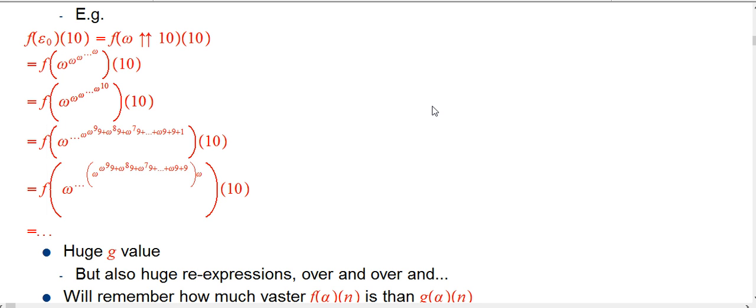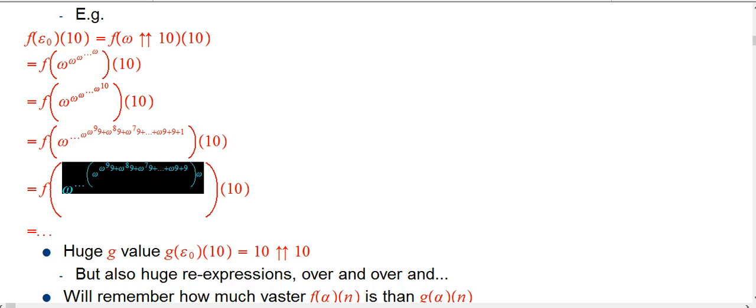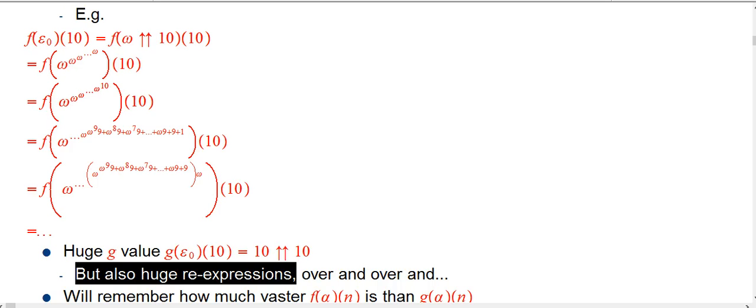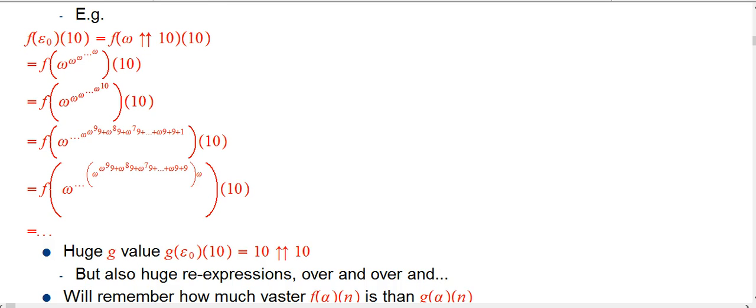We do get in fact a huge g value, namely g of epsilon naught of 10 is 10 double up 10, which, by the standards of just quadratics, cubics, even exponentials, is suddenly much, much, much bigger. And so the g value is huge, but then, of course, if I really am interested in the f value, not only am I interested in how long is it going to take before this thing even gets to be a successor ordinal, and then decrement and decrement and go through successors and limits and successors and limits down to zero, that's the process for figuring out g, then there's the issue of I've got this huge stack of functions that are waiting to be re-expressed, re-expanded, over and over and over and over again, as I was talking about at the start of this video, to produce an absolutely amazing f.